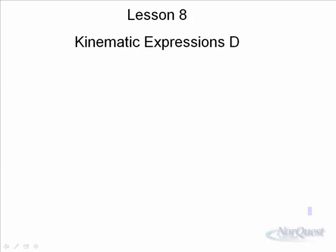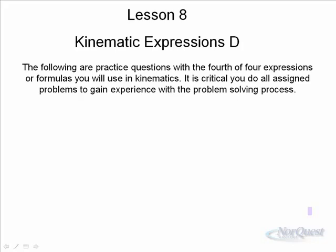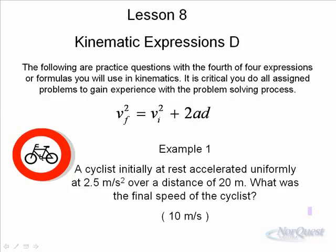So given that fourth kinematic expression, let's do a little bit of practice. It is critical that you do all assigned problems to gain experience with the problem solving process. So vf squared is equal to vi squared plus 2ad. Sometimes this is called the quadratic kinematic expression because it contains the squares there. A cyclist initially at rest accelerated uniformly at a rate of 2.5 meters per second squared over a distance of 20 meters. What was the final speed of the cyclist?